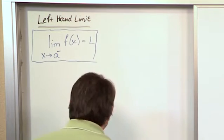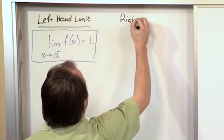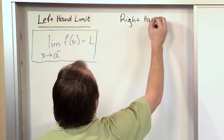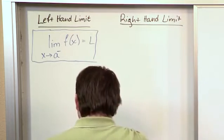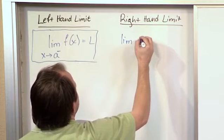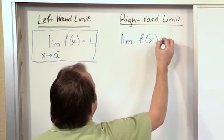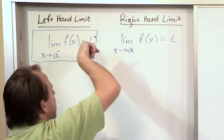All right, now you might guess that a right-hand limit is very similar. It's basically the same sort of thing, but you're walking from the other side. So you might have the limit of f(x) equals some limit L, as x approaches a,